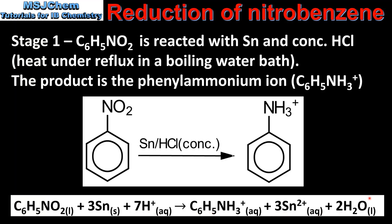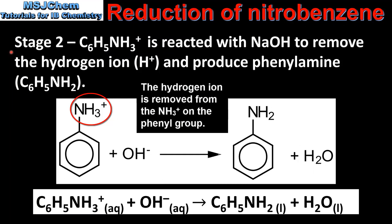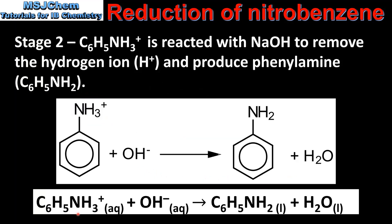Next we look at stage 2. The phenylammonium ion is reacted with sodium hydroxide to remove the hydrogen ion and produce phenylamine. The phenylammonium ion reacts with the hydroxide ion from sodium hydroxide to form phenylamine and water. The equation for stage 2 is: the phenylammonium ion plus the hydroxide ion forms phenylamine plus water.